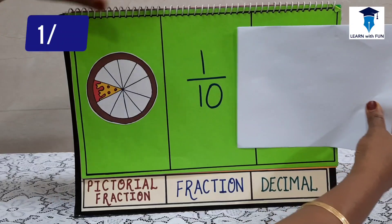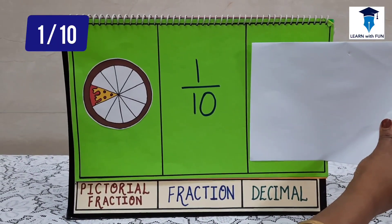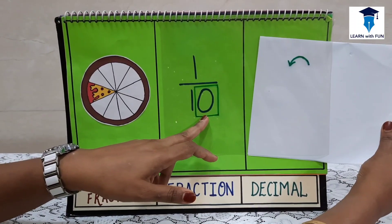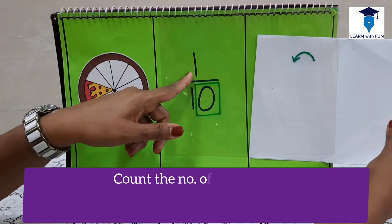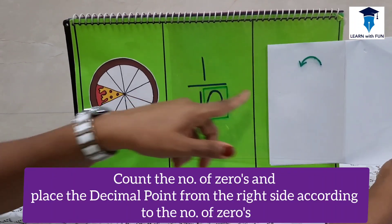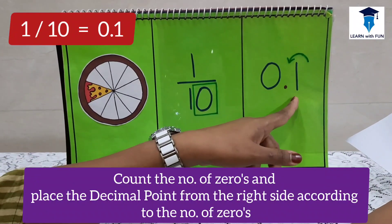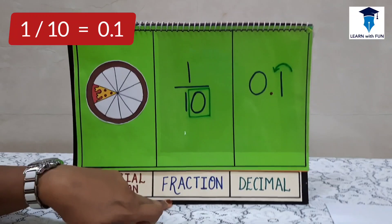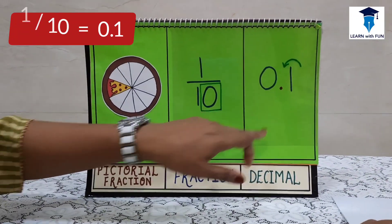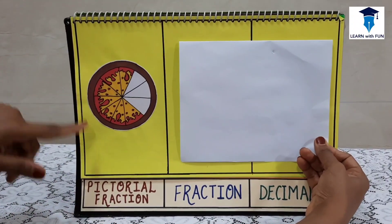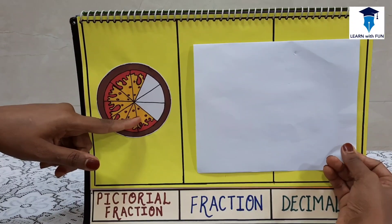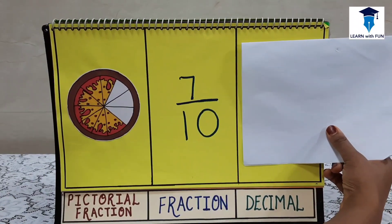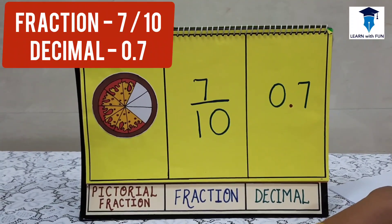The child is going to write 1 upon 10. To convert this into decimal, the child has to see the number of zeros at the denominator's place — there is only one zero. The numerator is 1. Since there is one zero, the digit shifts one place, so 1 upon 10 in decimal form becomes 0.1. Similarly, in the next pizza model, out of 10 pieces, 7 pieces are left. In fraction form that is 7 upon 10, and since there is one zero, the decimal form is 0.7.